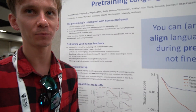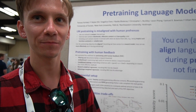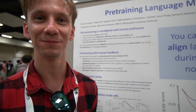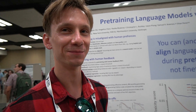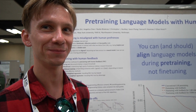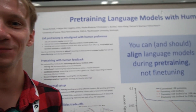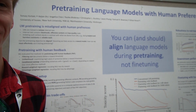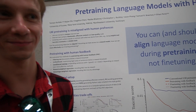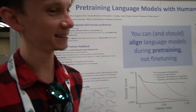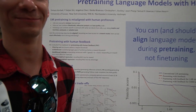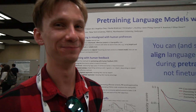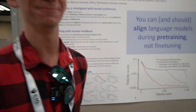Hot take: if you want your AI to be aligned, try to teach the AI to be aligned from the start. Like a child — you don't want to teach your kid to be moral only when they're already an adult. It's a great paper, check it out. Thank you.